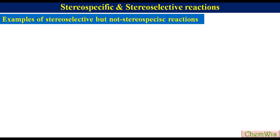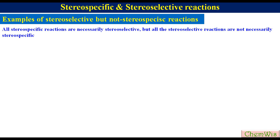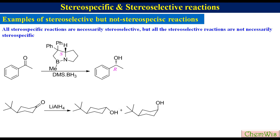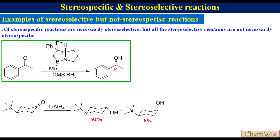Now we will discuss a few reactions which are stereoselective but not stereospecific. One should remember that all stereospecific reactions are necessarily stereoselective, but not all stereoselective reactions are necessarily stereospecific. For example, reduction of acetophenone with DMS-borane in the presence of CBS catalyst gives R-alcohol. Since the ketone cannot show stereoisomerism, there is no question of stereospecificity.